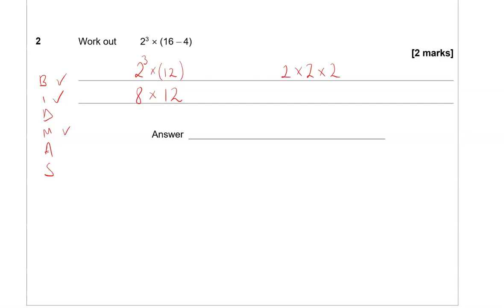So 8 × 12. We've done the indices. Now what's left is the multiplication. 8 × 2 gives us 16. 6 down and 1 carried over. 8 × 1 is 8 and the 1 is 9. So 96 is the answer.